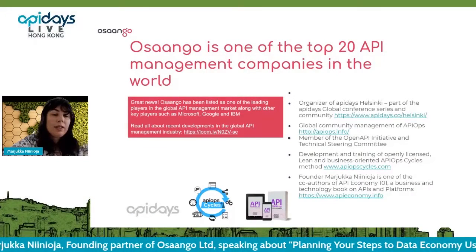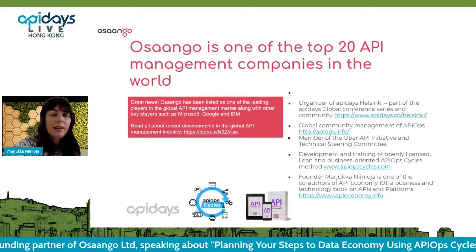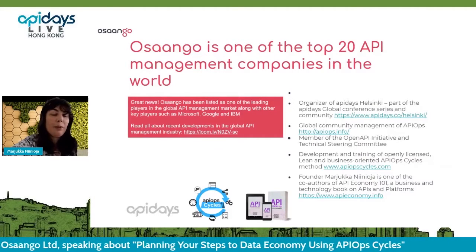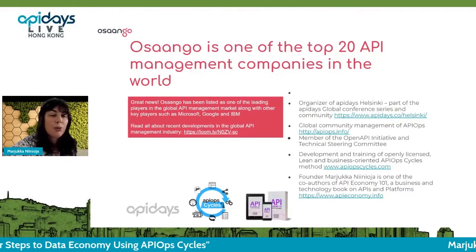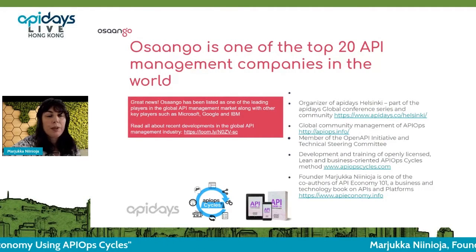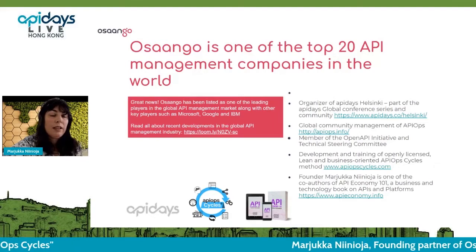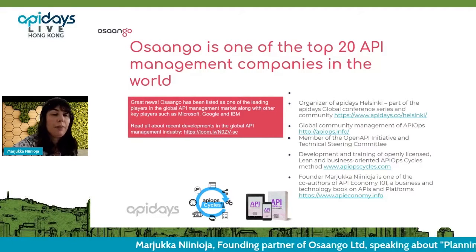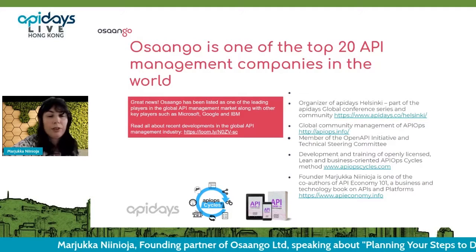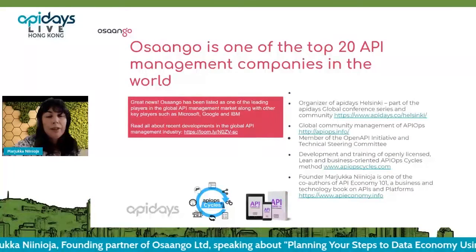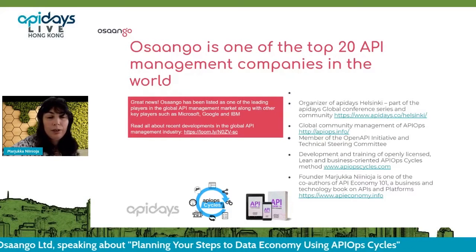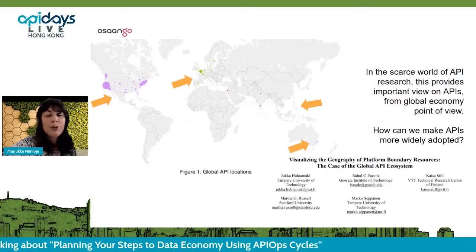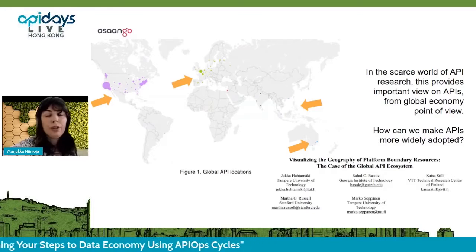You may have seen or will see Claire Barrett at this same stage from the API Collective too. I'm consulting and training public sector and private companies around the world. I also created the API Cycles method together with some other people and I'm co-author of API Economy 101. Osango is a company that has been in the top 20 list of API management consulting companies for the past three years, alongside names like Microsoft, Google, IBM, and Salesforce.